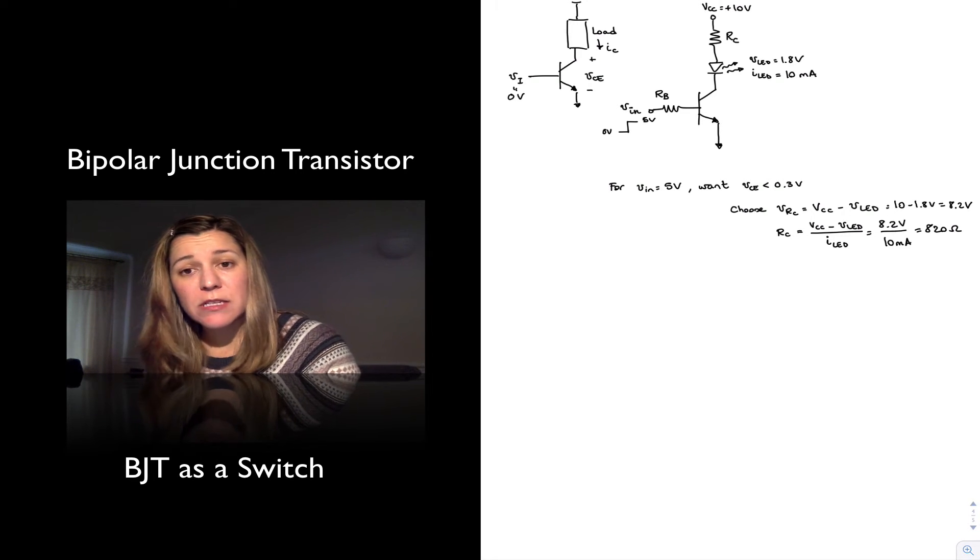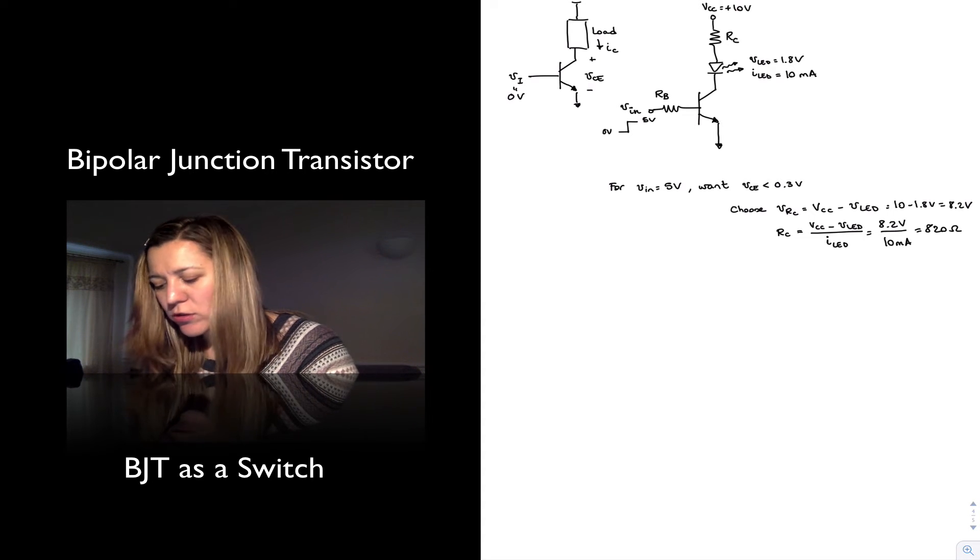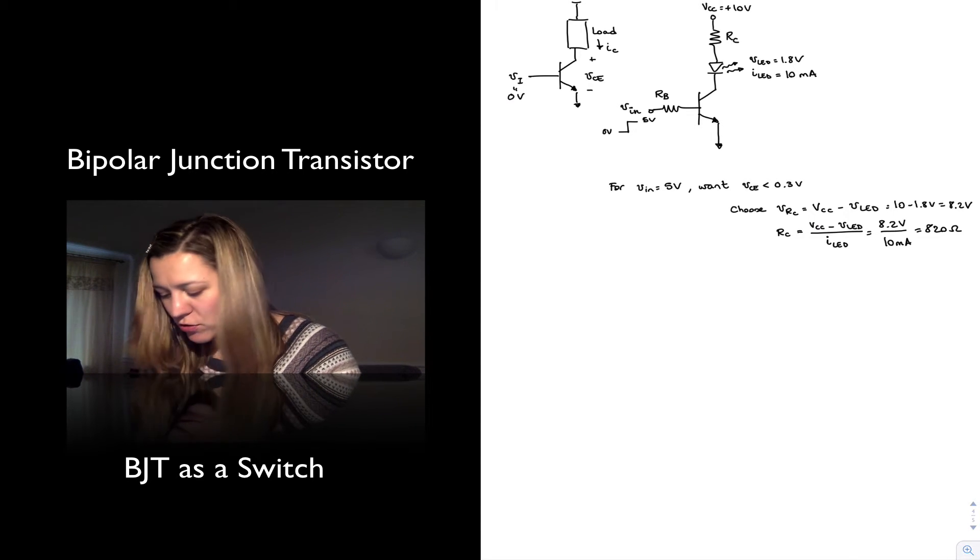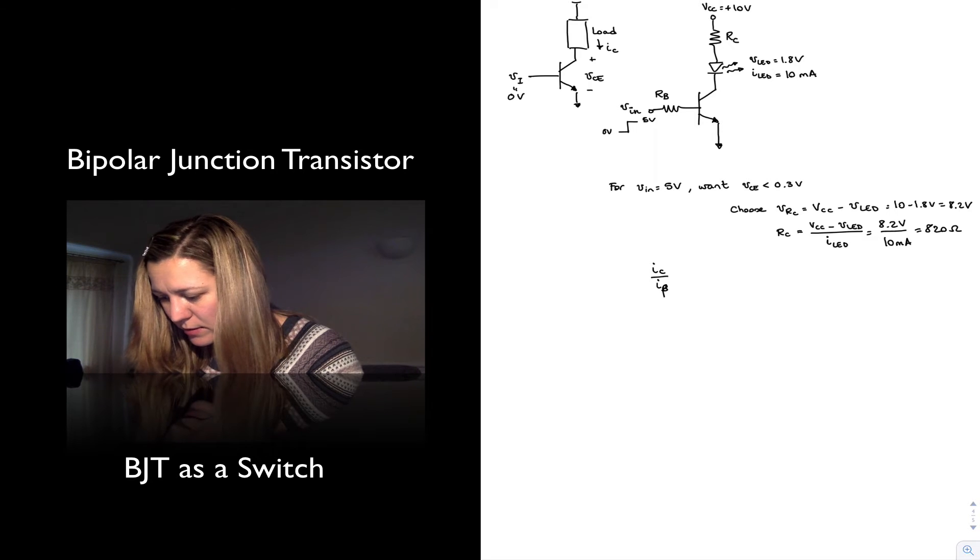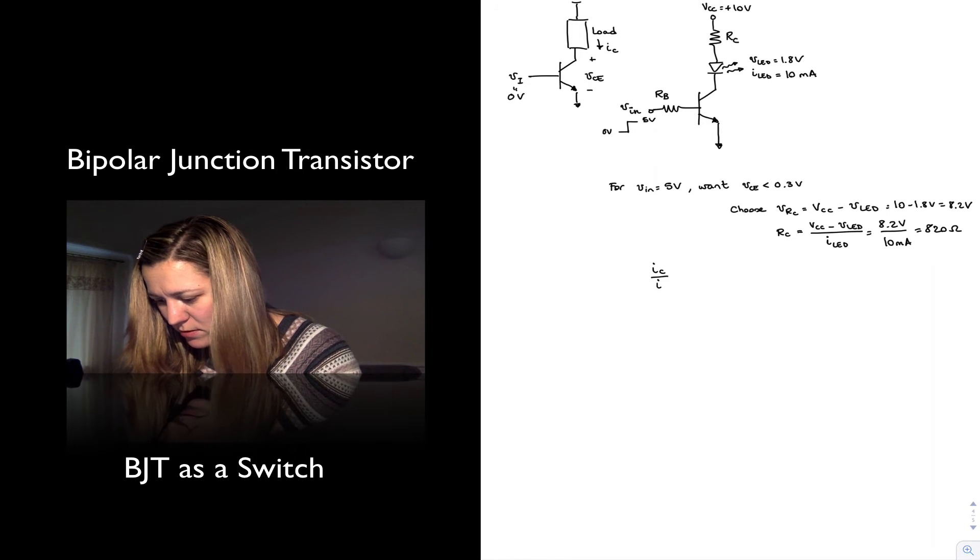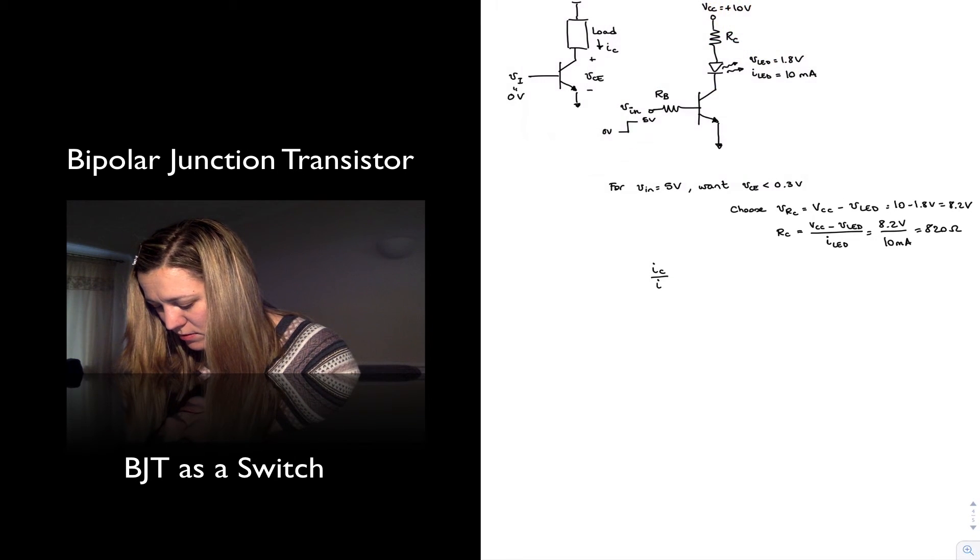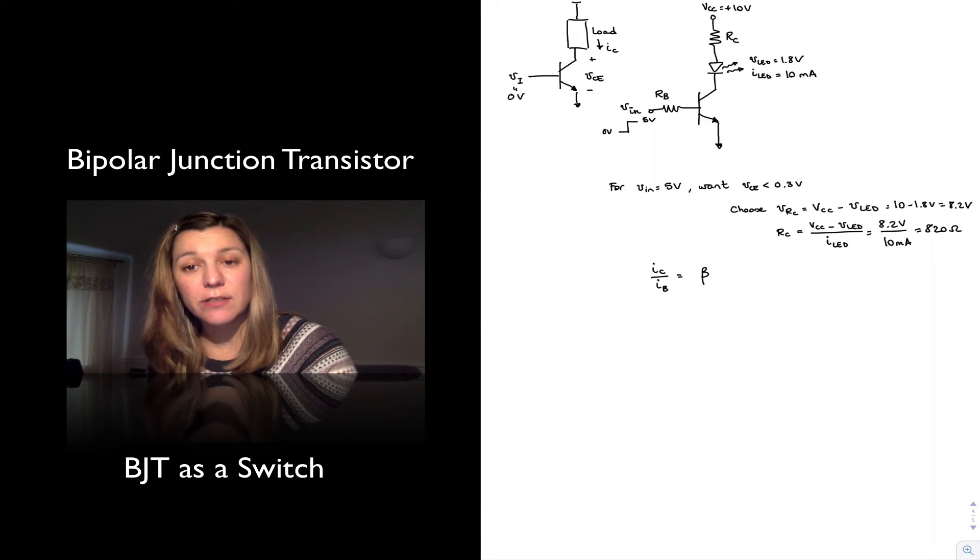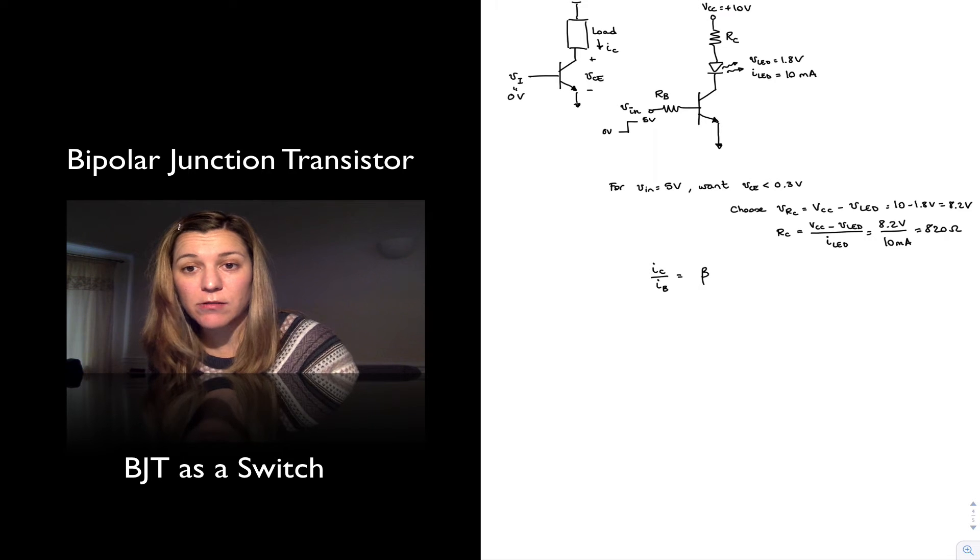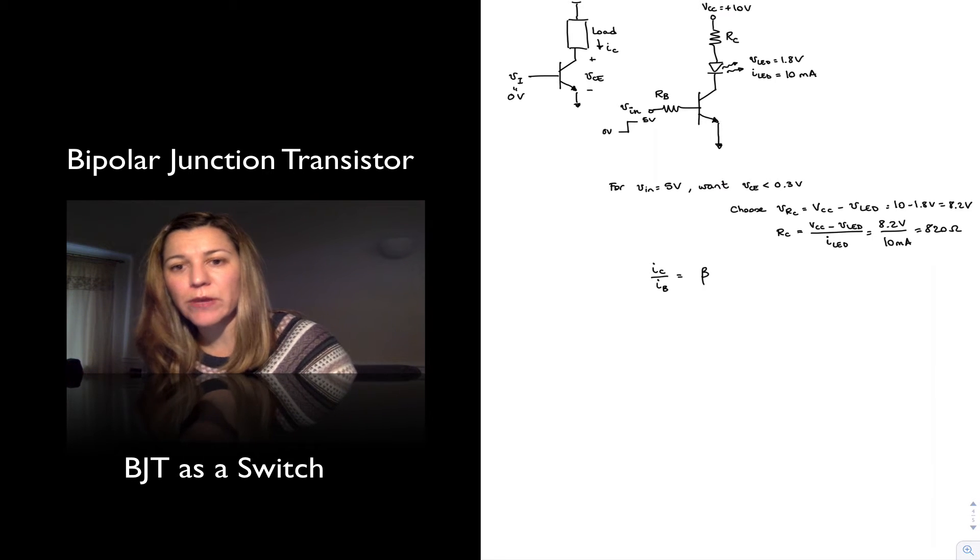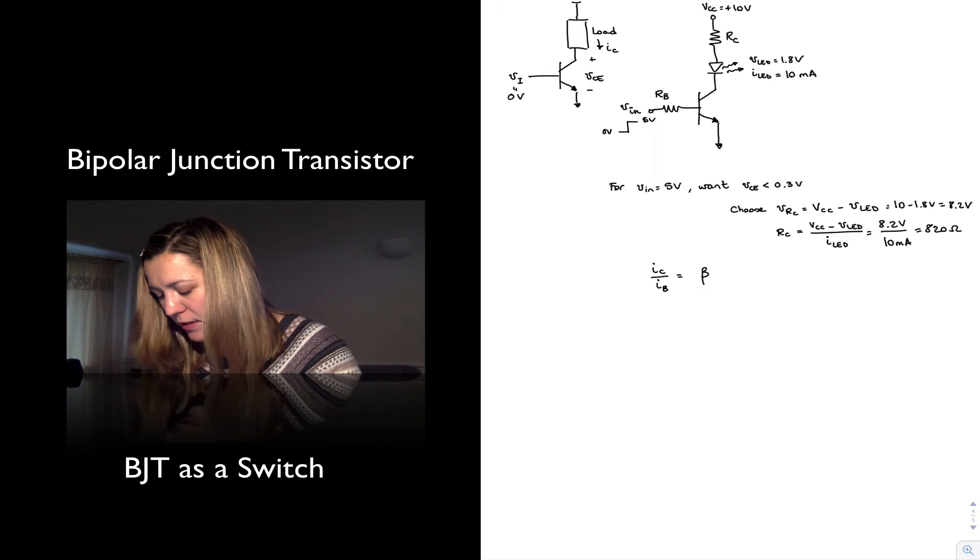Normally a rule of thumb to keep the transistor in saturation. We talked about how in the linear region of operation we have IC divided by IB being equal to beta. We call beta the current gain. When we're considering that the base current is the input signal and the collector current the output signal, we say the collector current is equal to beta times IB.